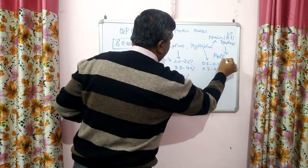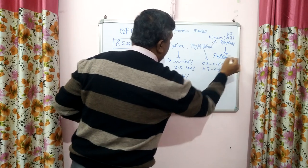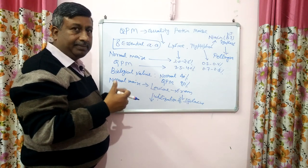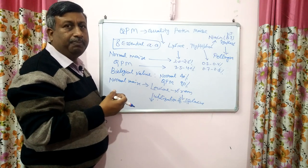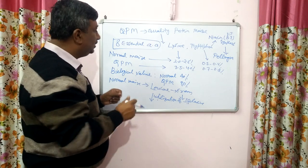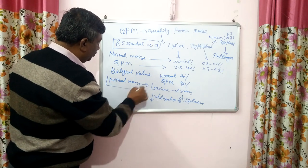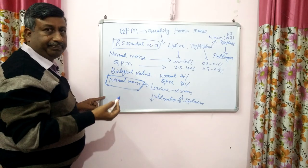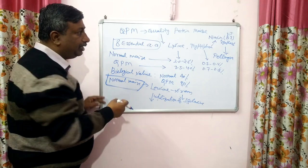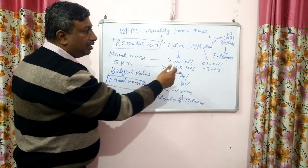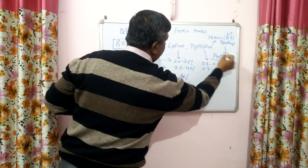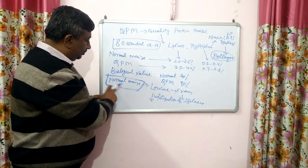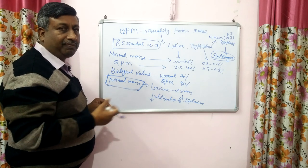This is the reason that when a human consumes more normal maize in their diet, there is a chance of pellagra disease. This question is often asked in examinations: which disease occurs due to more utilization of normal maize?